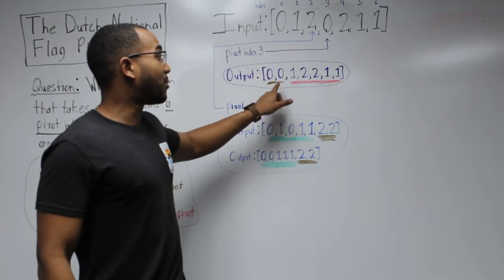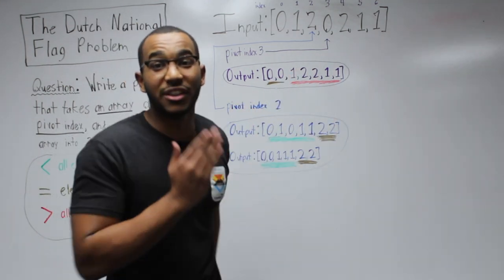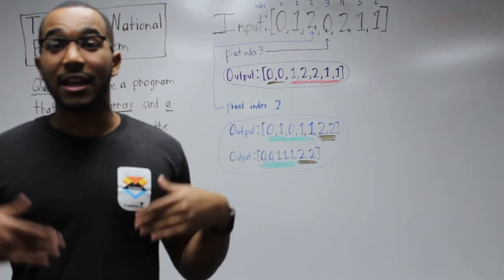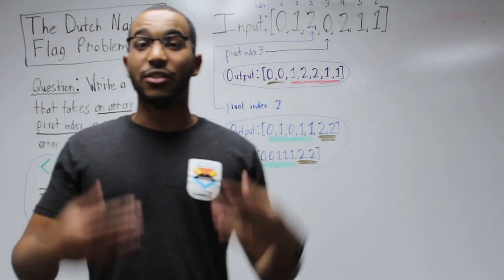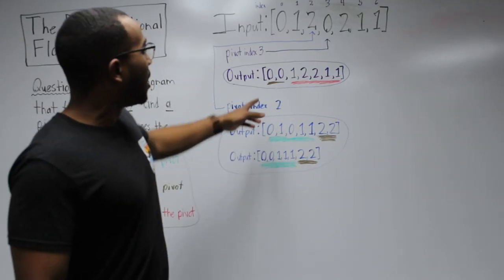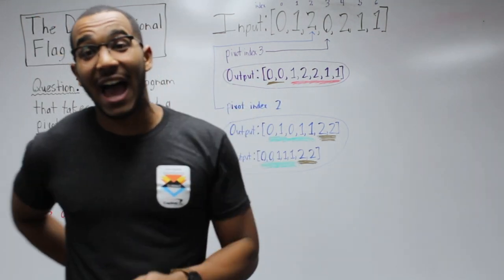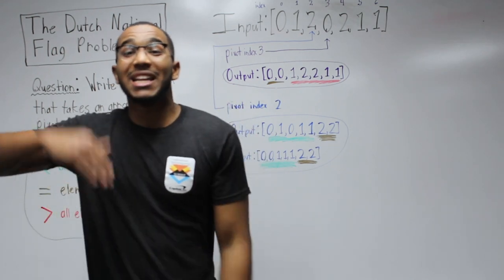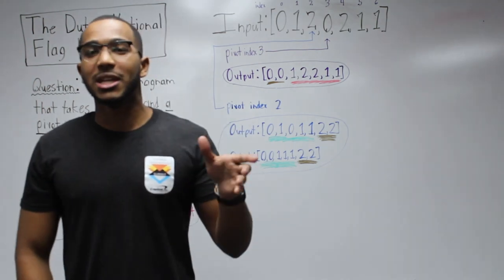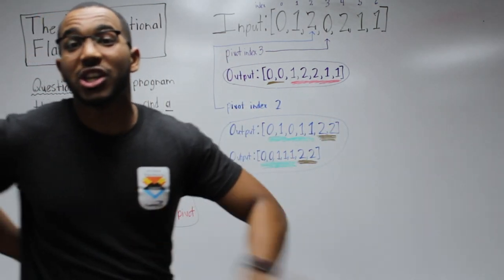We have all our zeros grouped in a brown region, and then all the ones and twos are to the right of zero. This creates a coloring like the Dutch national flag, which has three colors — that's where the problem's name comes from. We'll be missing one of the colors of the flag if our pivot element is the greatest or least item in the array, pushing it to the edge.